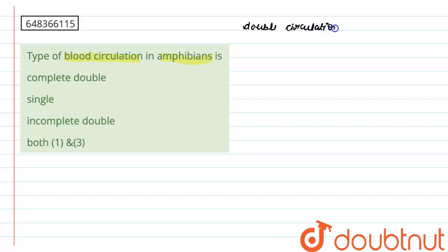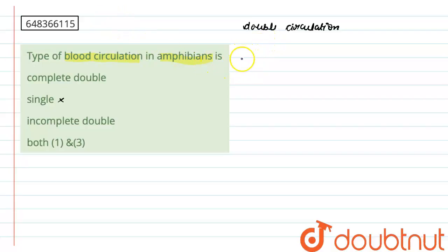Since the primary type of circulation is double circulation, we can eliminate option two, single circulation. Now we have to determine whether it is complete double or incomplete double circulation, so let's look at the heart of an amphibian.